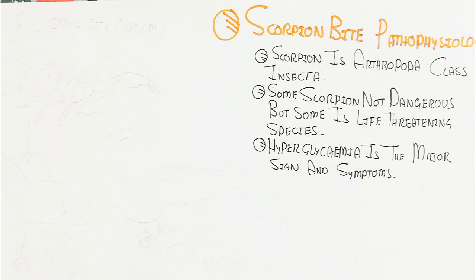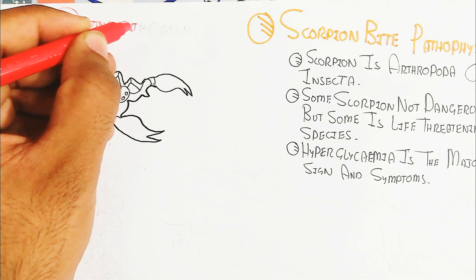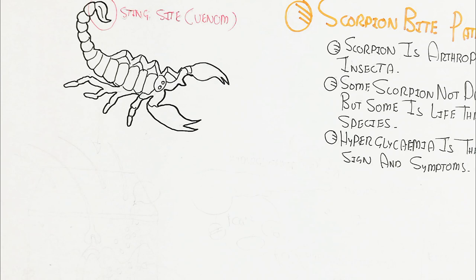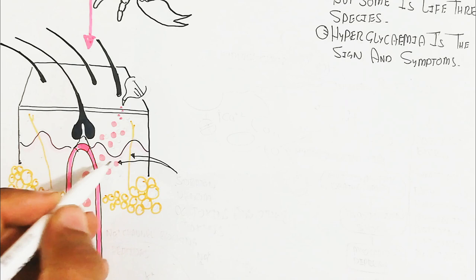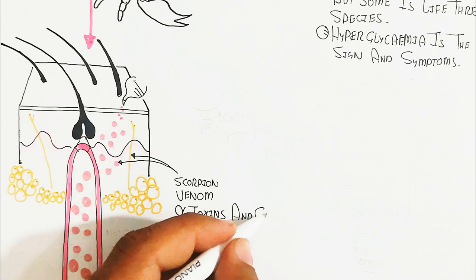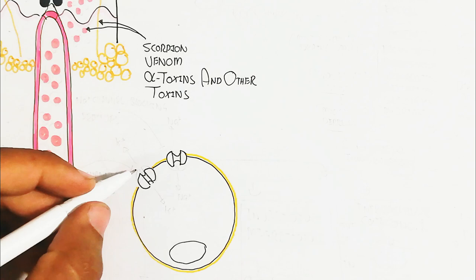The venom, when injected into the skin, can be in the form of alpha toxin and other toxins. When alpha toxin and other toxins enter into the blood circulatory system, they change the physiology by targeting specific tissues on the basis of venom content, such as sodium channel blocking peptides and calcium channel blocking peptides.